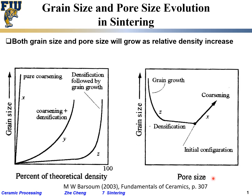The plot on the right shows grain size versus pore size. Initially, your starting configuration has a certain grain size and a certain pore size. If both grain size and pore size increase together, that's typical coarsening. For densification, ideally you go in the direction of a slight increase in grain size while the porosity gets squeezed out — shrinkage eliminates the pores, reducing pore size.